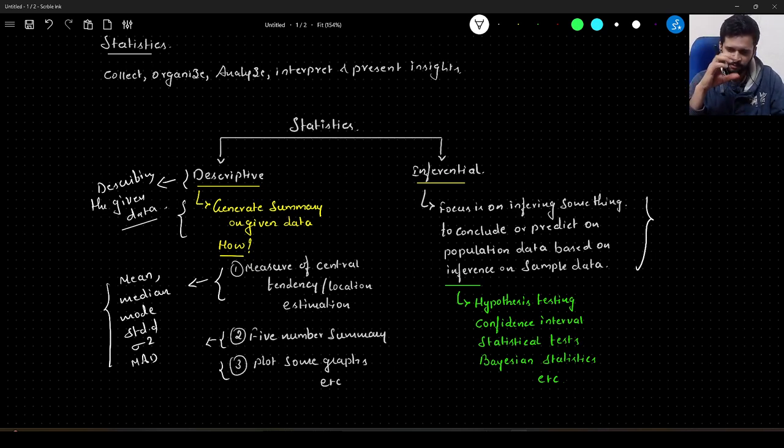What they do is take some sample. Let's say they consult around 1 lakh, 2 lakh people, or even 1 crore people out of 140 crores. That 1 crore or 1 lakh will be called sample data. Based on whatever the feedback is, we predict which party will be winning this particular election. That's what inferential statistics is about.